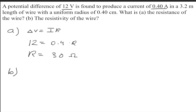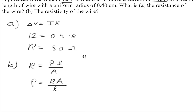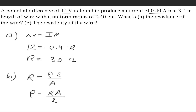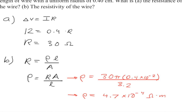To solve part B, the resistivity — we have this formula right here. Resistance in a wire is the resistivity times the length of the wire divided by the cross-sectional area. Let's rearrange and solve for this variable. This symbol is called rho, spelled R-H-O. We're given this piece of information and we found what R is equal to. So the resistivity will be 30 times pi times 0.4 times 10 to the minus 2 meters, divided by 3.2 meters. We get that the resistivity is equal to 4.7 times 10 to the minus 4 ohm meters.